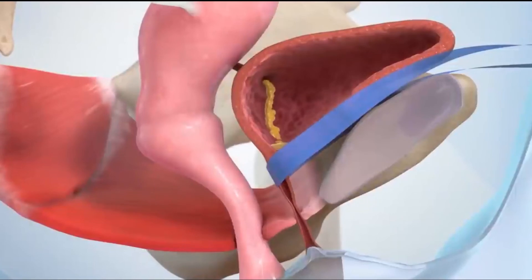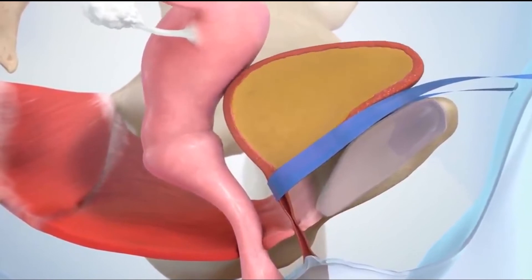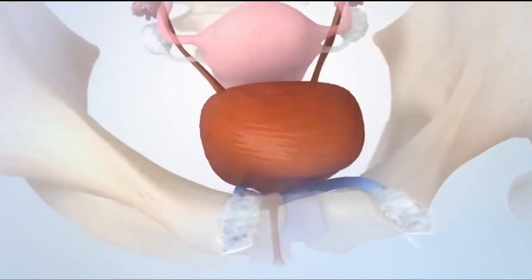After the procedure, the tape will support your urethra and prevent urine leakage. Over time, scar tissue forms around the tape to hold it in place.